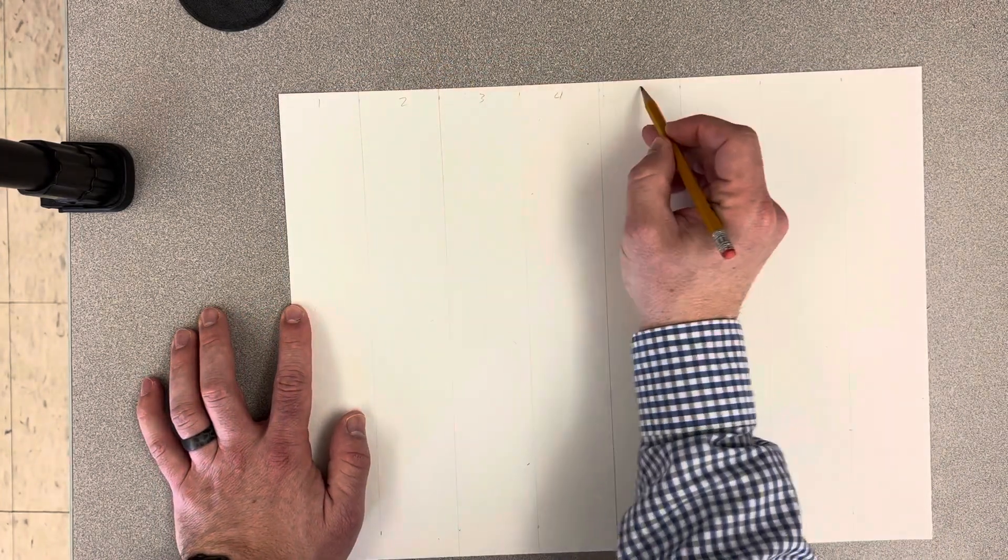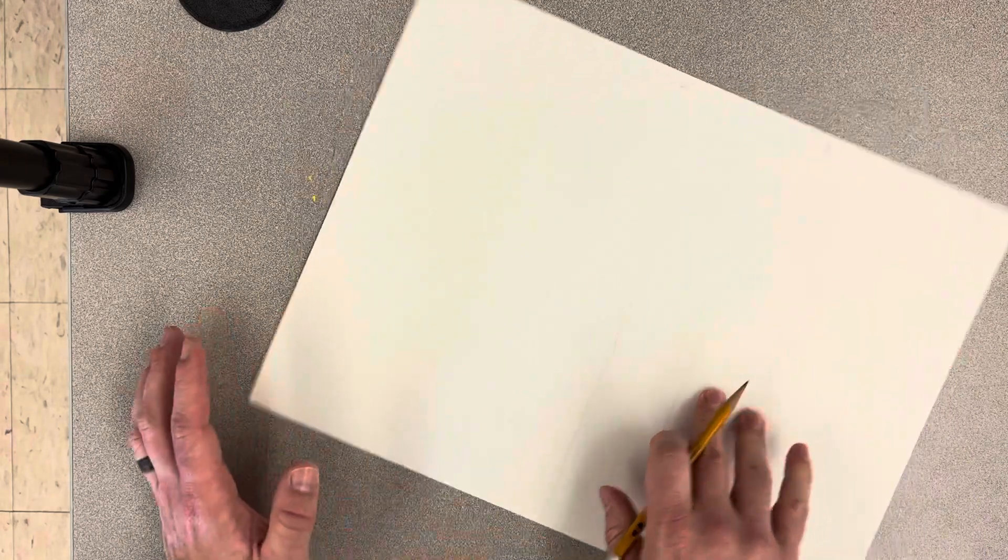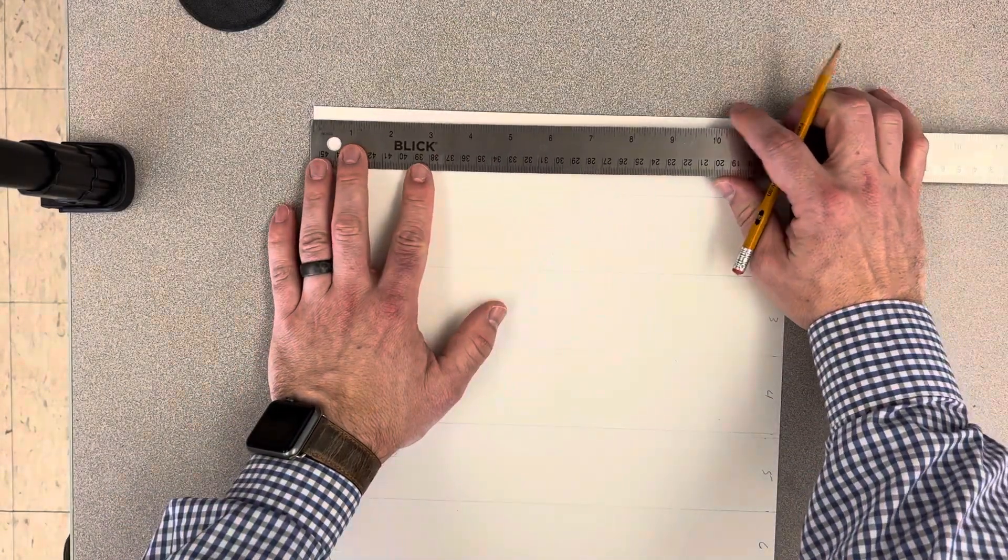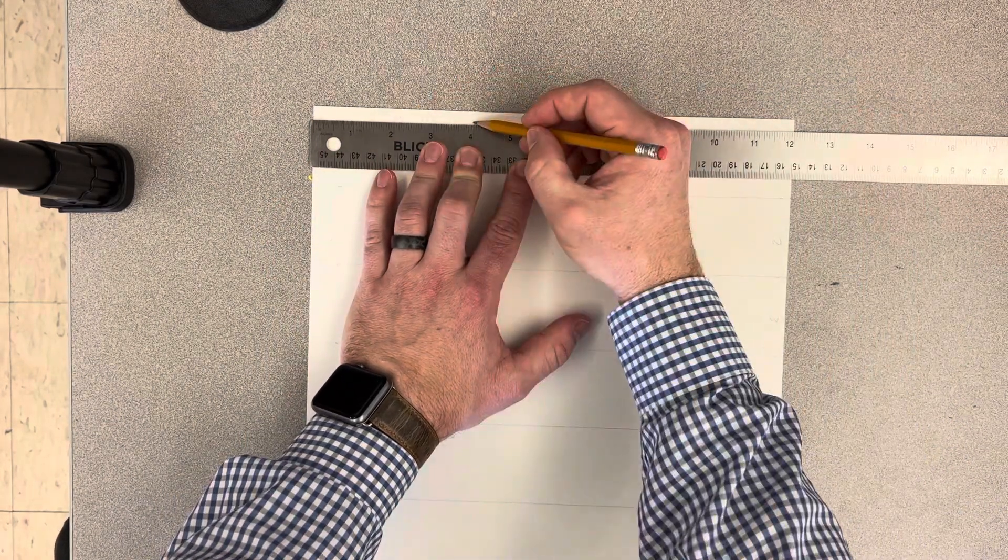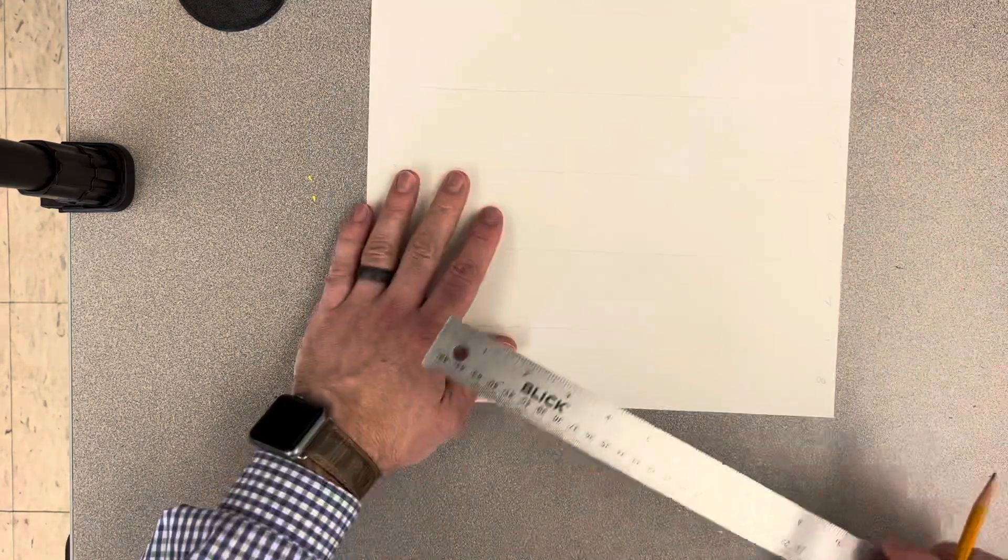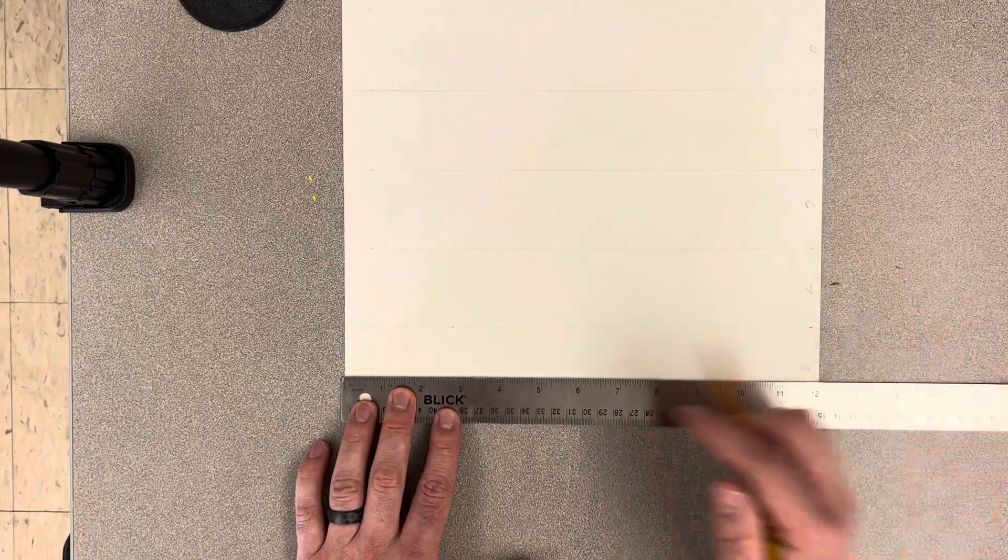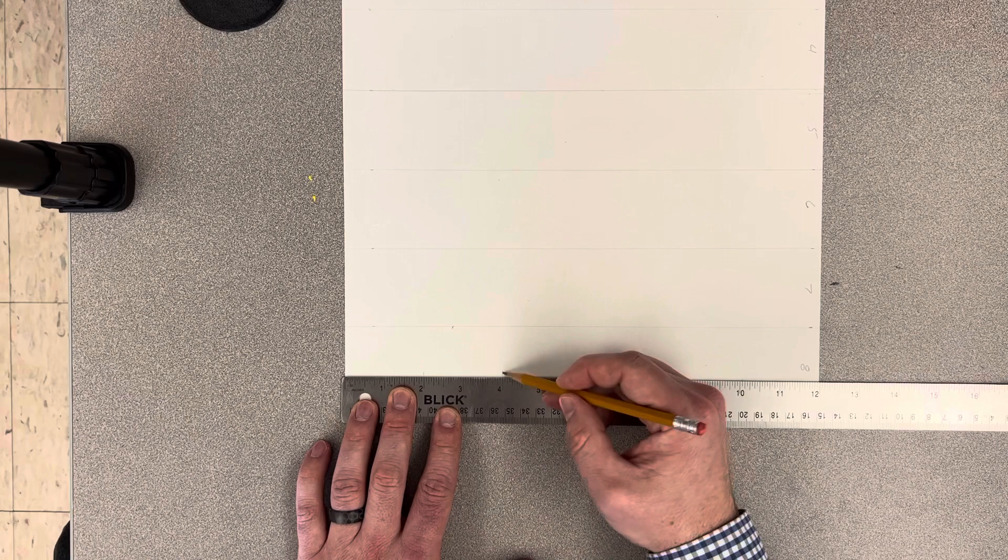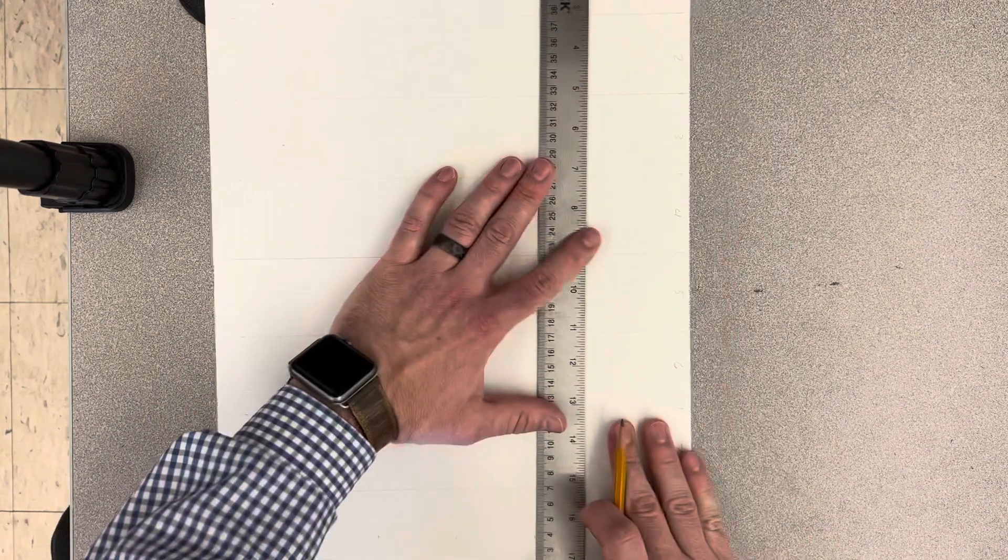Now what I need to do is rotate my paper because I still need to do these rows. Rotate it. Same thing, left to right. Put the ruler down, make sure it doesn't move. Put a mark: two—always two inches—four, six, eight, ten. Go to the bottom of my paper, put the ruler down, make sure it's accurate, don't let it move. Two, four, six, eight, ten. Got it.